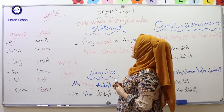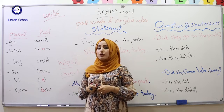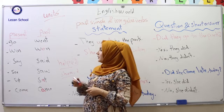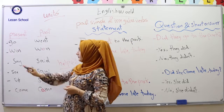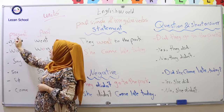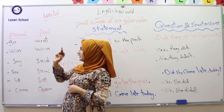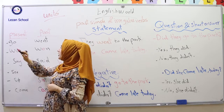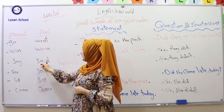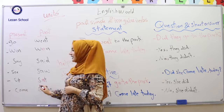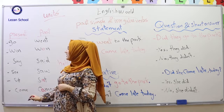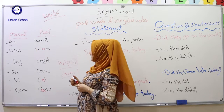Past simple of regular verbs — we only add -ed. But now let's see what are past simple of irregular verbs. Irregular verbs are those verbs that we cannot simply add -ed to change them into past. Here are the verbs in this unit: go → went, win → won, say → said, see → saw, sit → sat, come → came. We have the present form and the past form of these verbs.